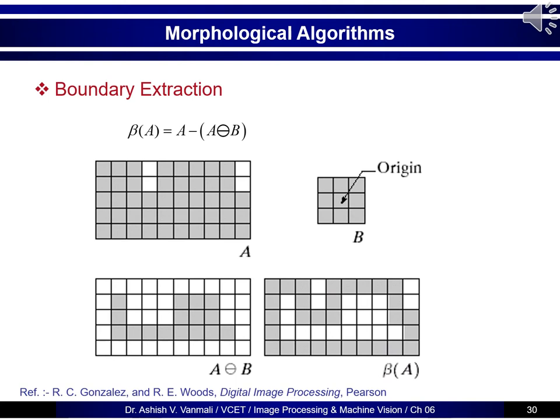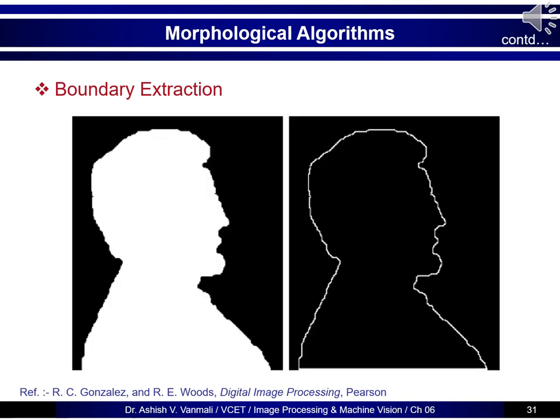When we erode A with a 3×3 structuring element B, the component shrinks by 1 pixel from each side, because there is 1 row above, 1 row below, 1 column left, and 1 column right of the center. The erosion result shrinks object A by 1 pixel, shown in the third figure. Subtracting A minus (A ⊖ B) gives the boundary shown in figure 4. Here is an example of boundary extraction on a binary image of a person, where the algorithm extracts the person's boundary.